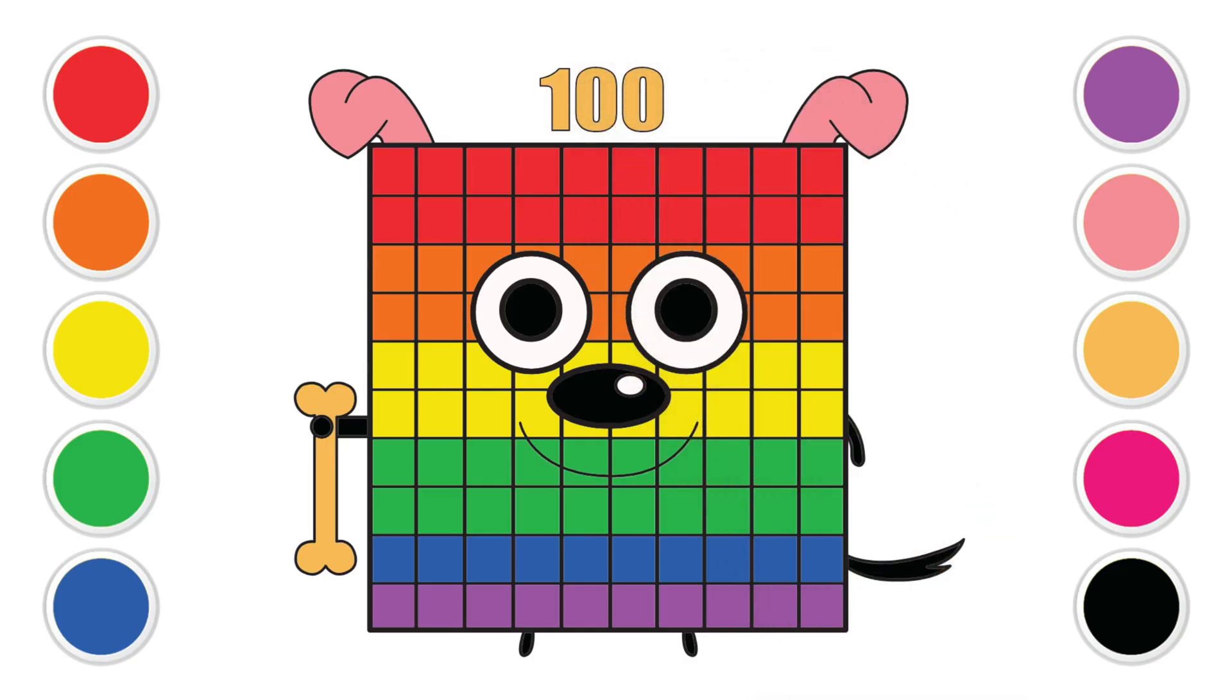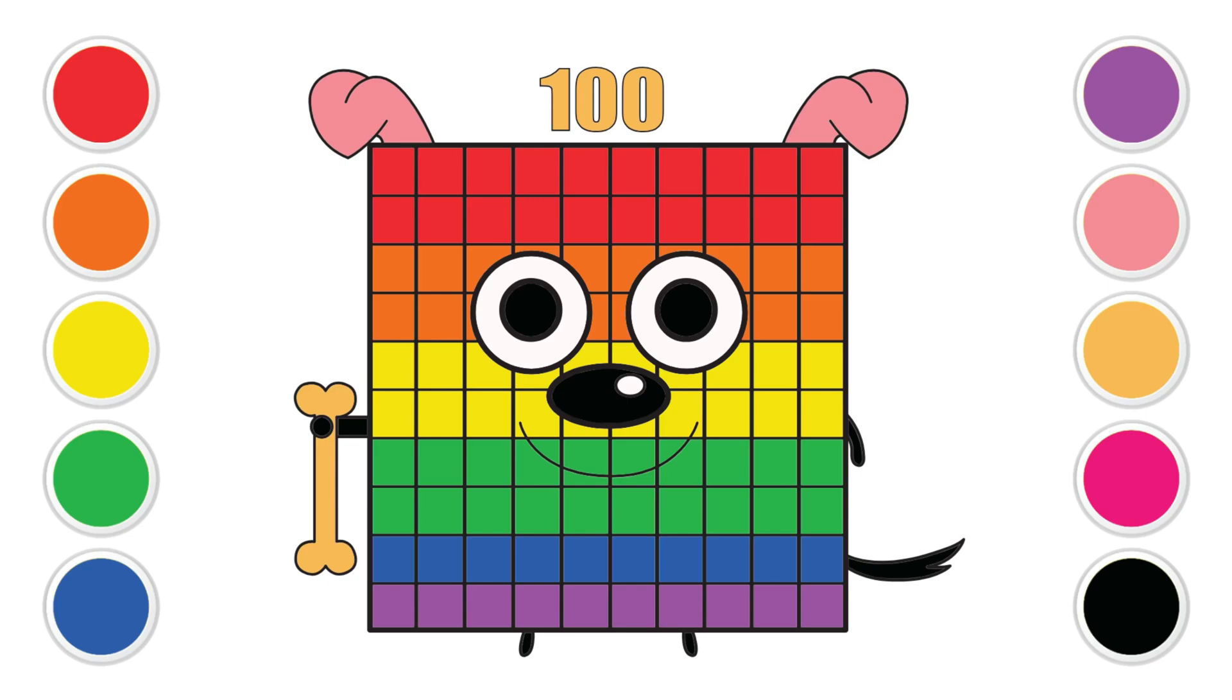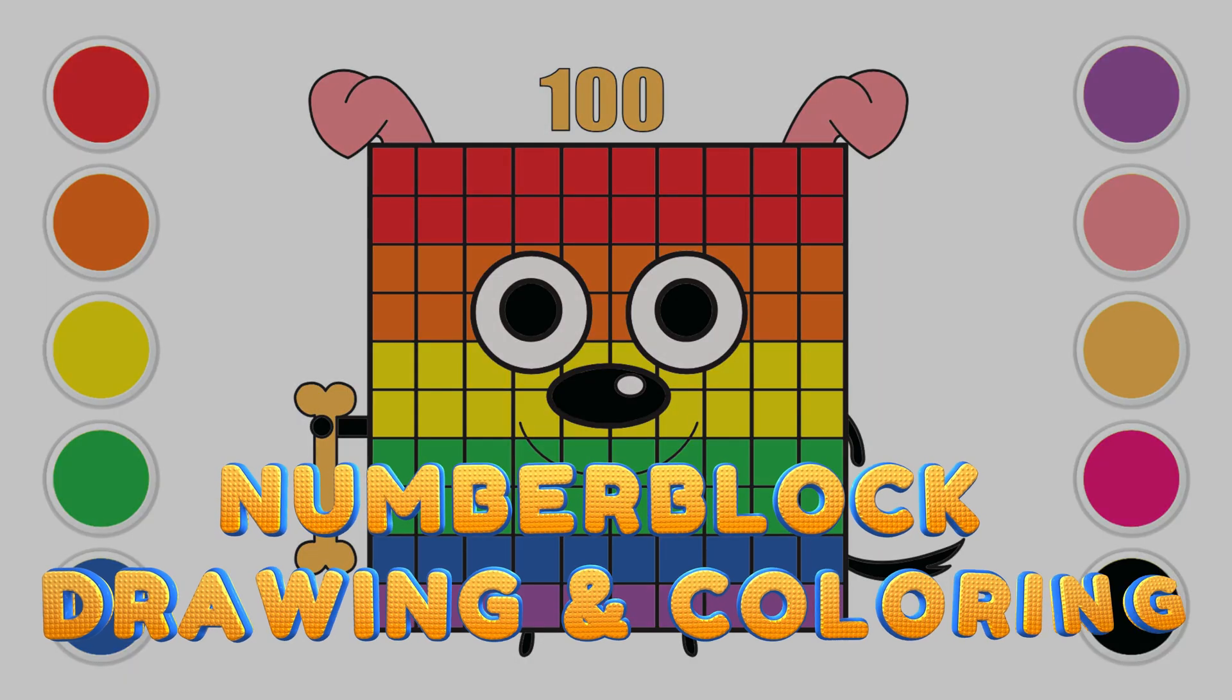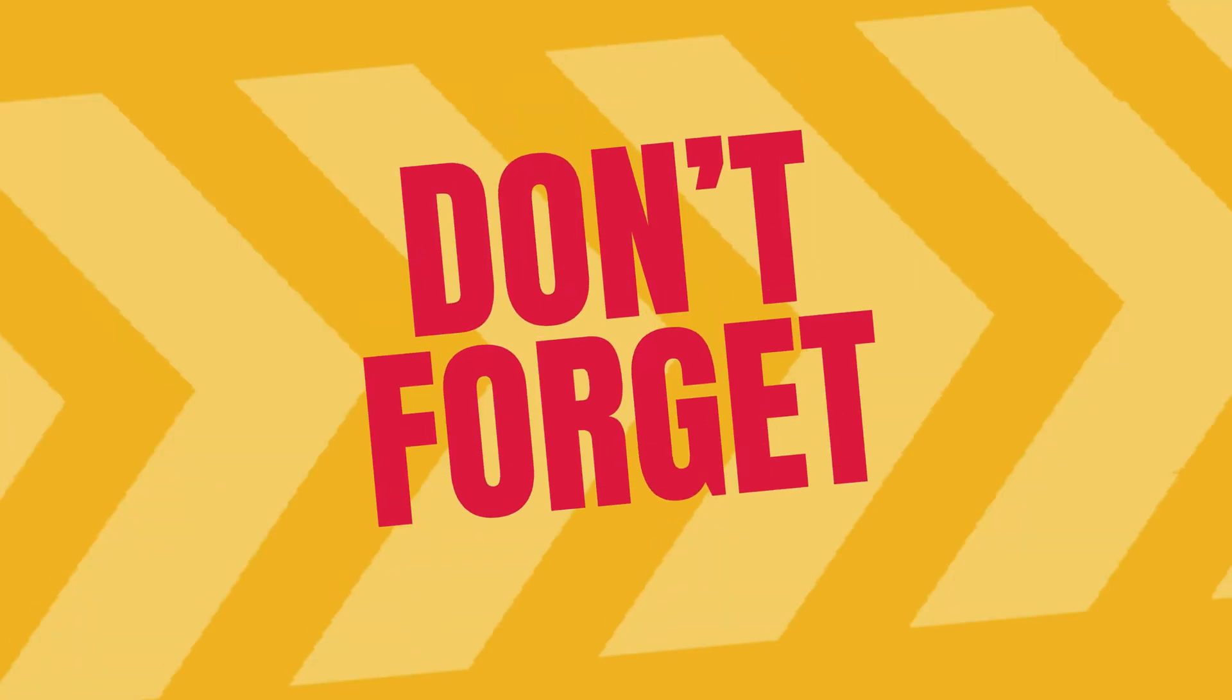You did it. You drew and colored number block one hundred the dog. He's a rainbow made of a hundred blocks. That's ten groups of ten. Woof woof. A hundred is awesome. Give yourself a big cheer. You're amazing.